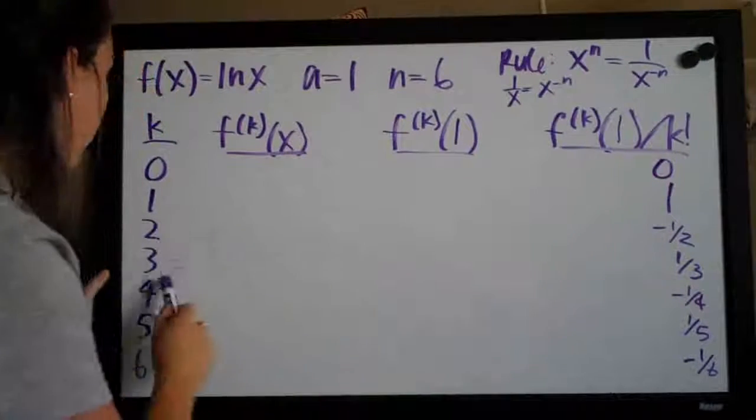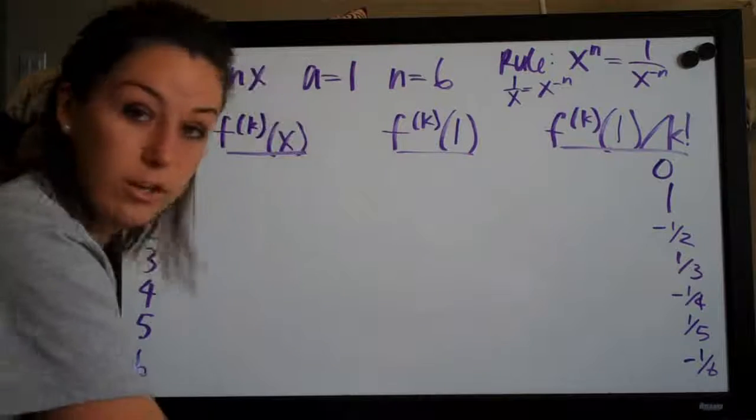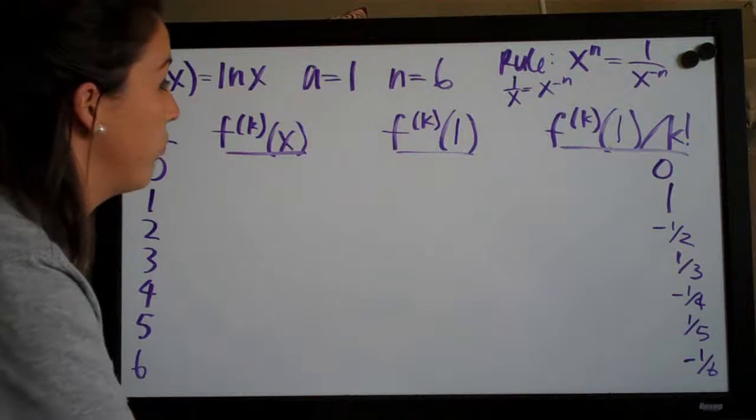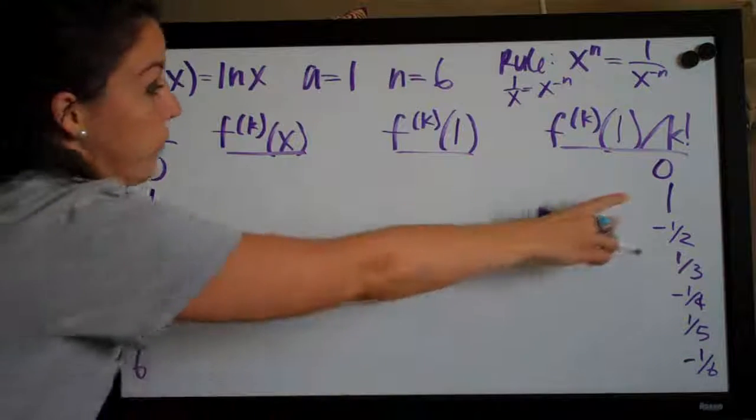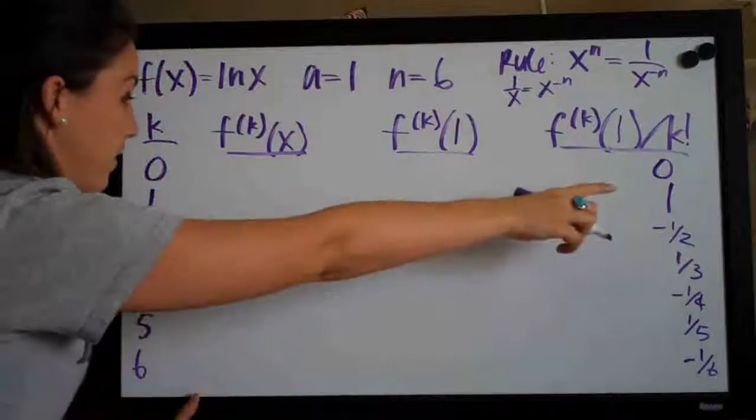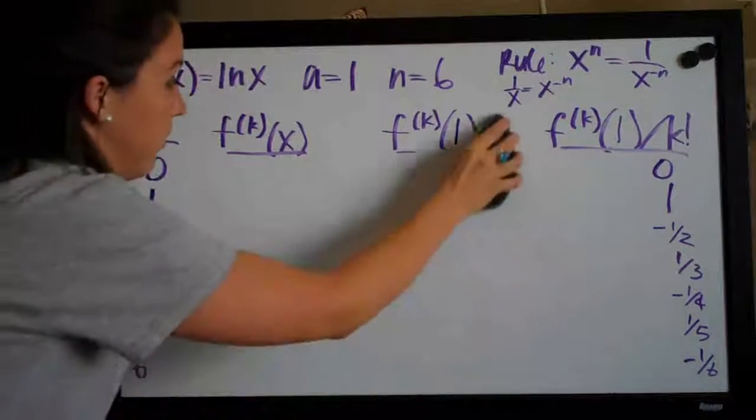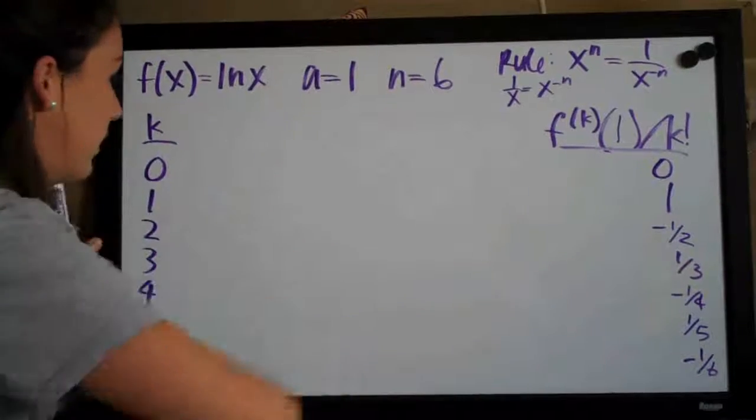But we need those coefficients and the k's here. So now for constructing our Taylor polynomial, it's really a pretty simple formula. We always do the coefficient first, so in this case our first coefficient is zero. And I can erase this as well, just to make it clear.